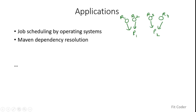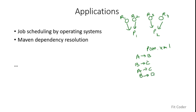Another example is Maven dependency resolution. In Maven build systems we specify dependencies in pom.xml. For instance, module a depends on b, b depends on c, a depends on c, and b depends on d. The build system must correctly identify which module to build first, and Maven relies on topological sort to determine the correct build order.